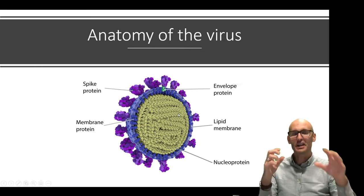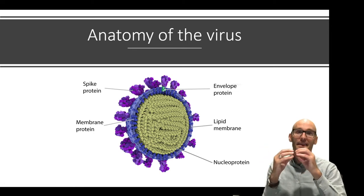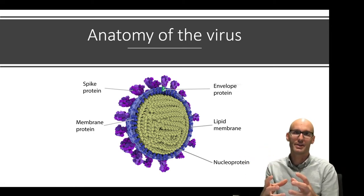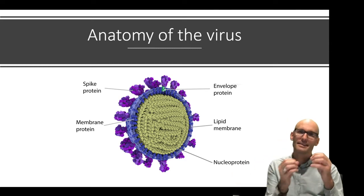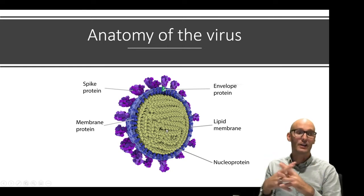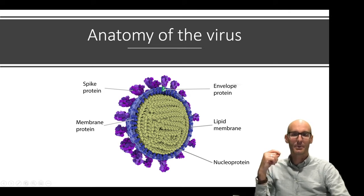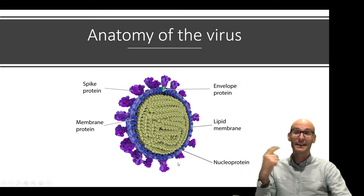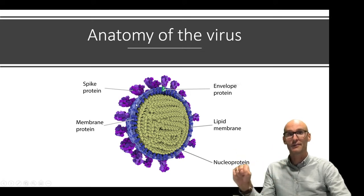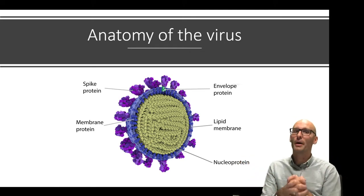Inside this virus is a very densely packed nucleoprotein — essentially the RNA genome tightly packed in with protein. It's the nucleotides and the proteins packed together to ensure that the RNA is functional when it comes out of the virus. It's got this phospholipid membrane around the outside, and later I'll do a video about how this phospholipid membrane is important when considering whether alcohol-based hand sanitizers are effective against COVID-19.